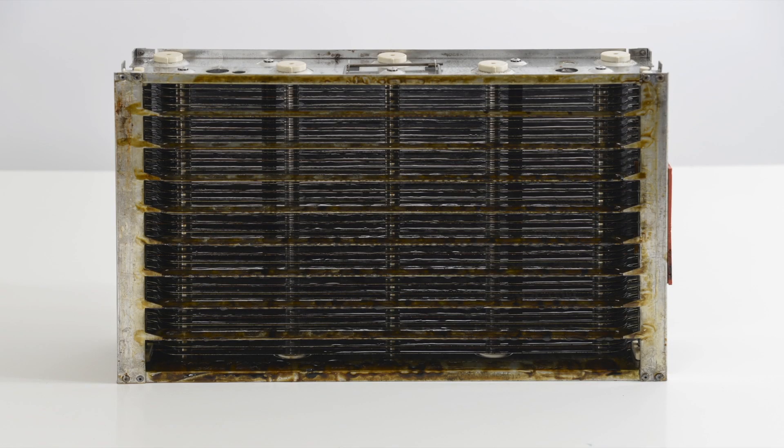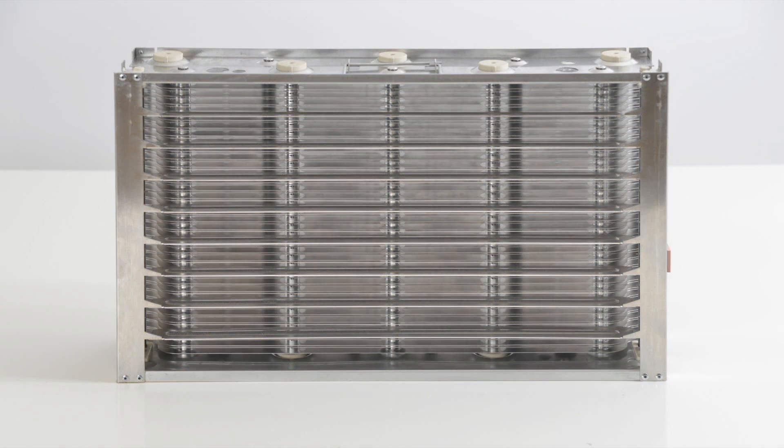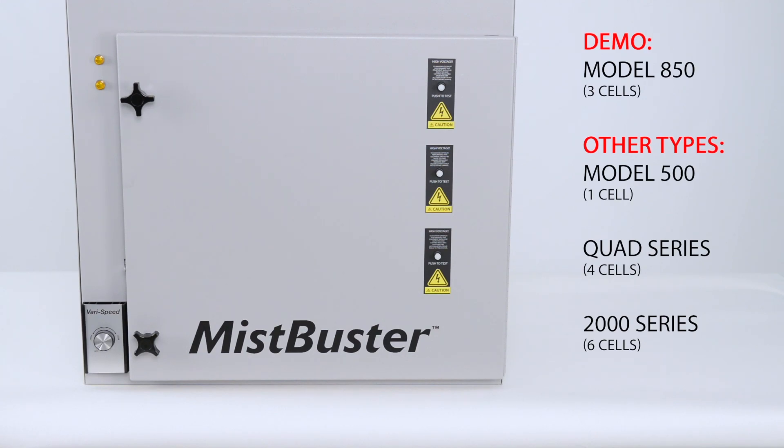The purpose of this video is to demonstrate how to clean a MistBuster 850 series electrostatic precipitator. This unit is a model 850. You might have a model 500 where there is one cell in the unit, or a quad where there are four cells, or a 2000 series where there are six cells. For this demonstration we are going to show the 850 model.